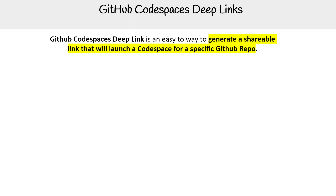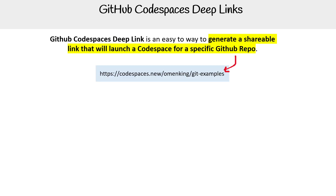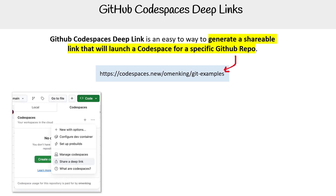A Codespaces deep link is just a way for you to generate a URL that will launch a code space for a specific repo. Here is a look at the actual URL — it says codespaces.new followed by a forward slash and then the repo name.